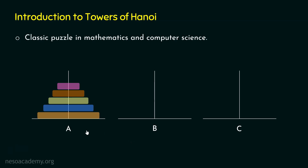There are only 64 discs placed on one peg, and the job is to move all 64 discs from one peg to another using one intermediate peg. But this will take millions of years to do. This myth is indeed true — it will take millions of years to finish this task, because if you follow the rules and shift all 64 discs, it will take millions of years.